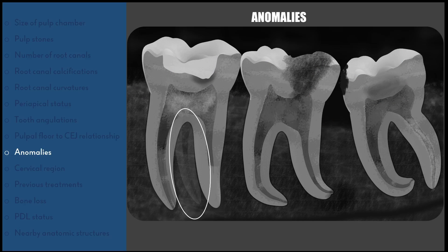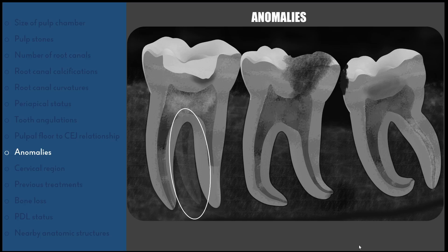Root canal anomalies are much more common than what we think. In this radiograph, between the mesial and distal root of the first molar, you can see a faint root — that is the extra root called the radix. If the extra root appears in the distolingual region, it is called radix endomolaris. If it appears in the mesiobuccal region, it is called radix paramolaris. In this example, it is a radix endomolaris. These extra roots are often missed and are one of the most important reasons for failure of root canal treatment. Two or more angulated radiographs should always be taken preoperatively and evaluated properly before initiating root canal treatment.